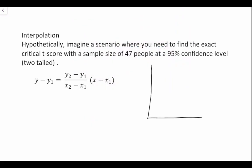So let's just visualize this for a second. We have our t-distribution, and what we're looking for is our critical t-score with a sample size of 47 people at a 95% confidence level.